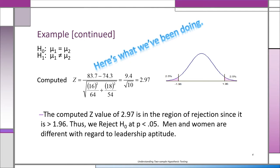Anything between plus 1.96 and minus 1.96, we don't reject. Here we got 2.97, which is clearly more than 1.96, so we say we reject H₀ at a probability of 0.05. In other words, we have found that men and women are different with regard to leadership aptitude.